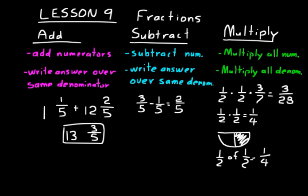Try to remember these general guidelines: when adding and subtracting fractions with common denominators, the denominators must be the same. When multiplying fractions, you multiply all numerators and multiply all denominators — the denominators do not have to be common. That's important: common denominators are only required for addition and subtraction.